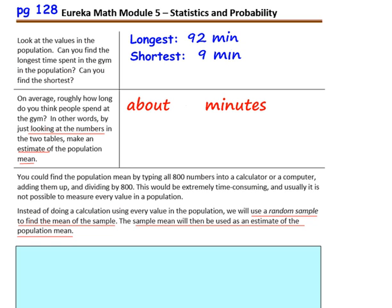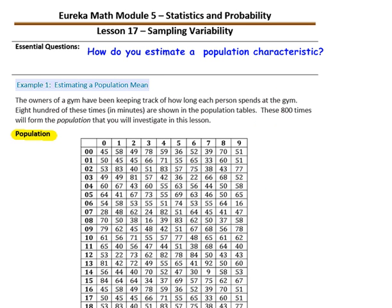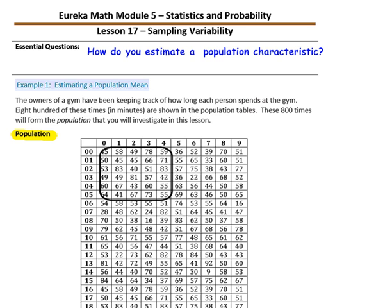On average, roughly how long do you think people spent at the gym? In other words, by just looking at the numbers in the two tables, make an estimate of the population mean. We have people going to the gym: 45 minutes, 58 minutes, 45 minutes, 45 minutes, 83 minutes, 81 minutes, 55 minutes. Now keep in mind, anything over 60 is over an hour.